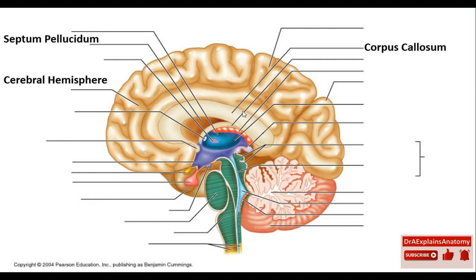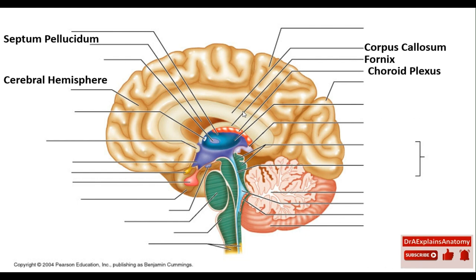This right here is the septum pellucidum. This is the fornix, as we can see. This right here is the choroid plexus, which is a collection of blood vessels, as shown in red right here.